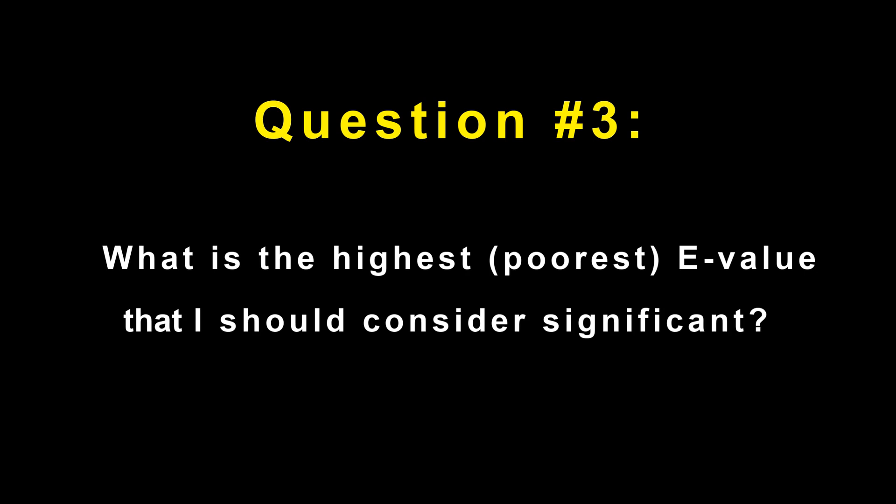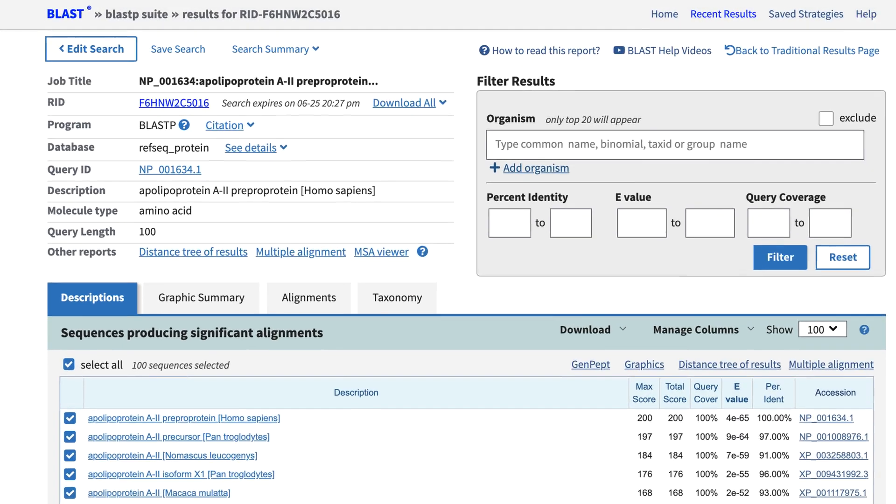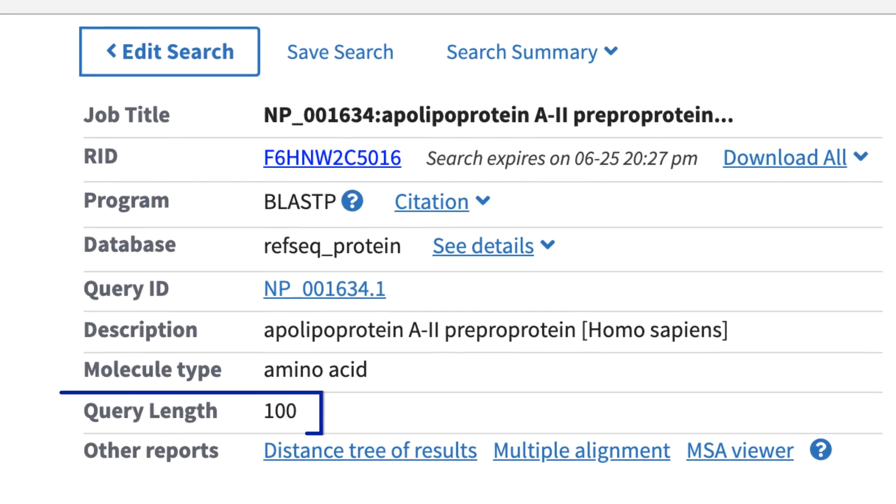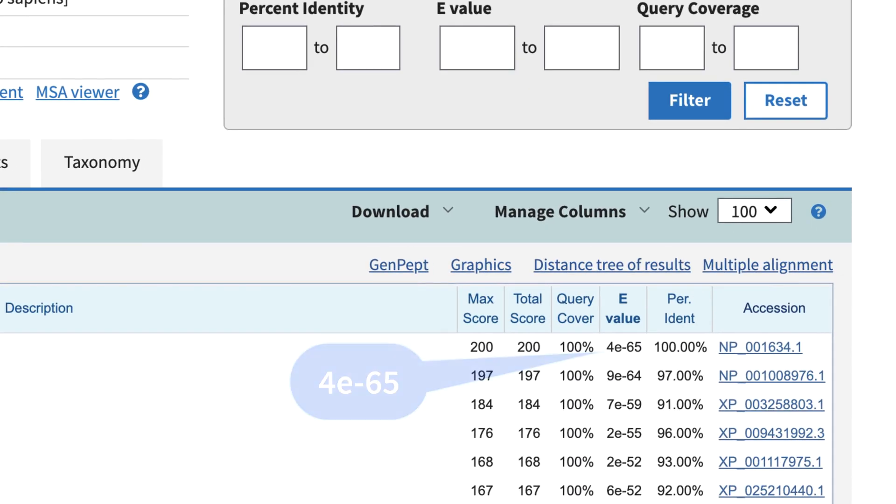Let's look at a couple examples that may help clarify this point. In a typical BLAST p-search, with a query of 100 amino acids against a large database like RefSeq protein, the full-length, 100% identical alignments might have E-Values on the order of 10 to the minus 65th or lower. Note that in BLAST we tend to use the notation 4E-65, or 4 times 10 to the minus 65th.